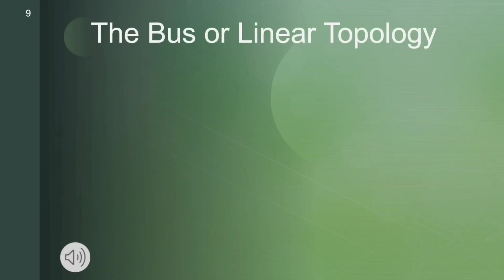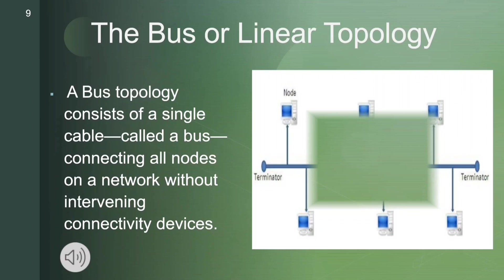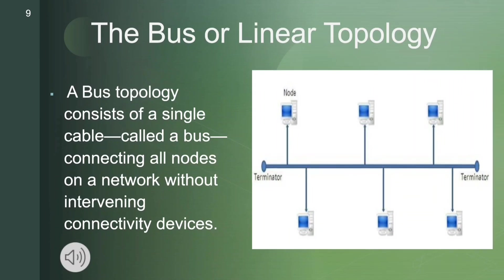Now the bus or linear topology. A bus topology consists of a single cable called a bus, connecting all nodes on a network without intervening connectivity devices, as you can clearly see in the diagram.